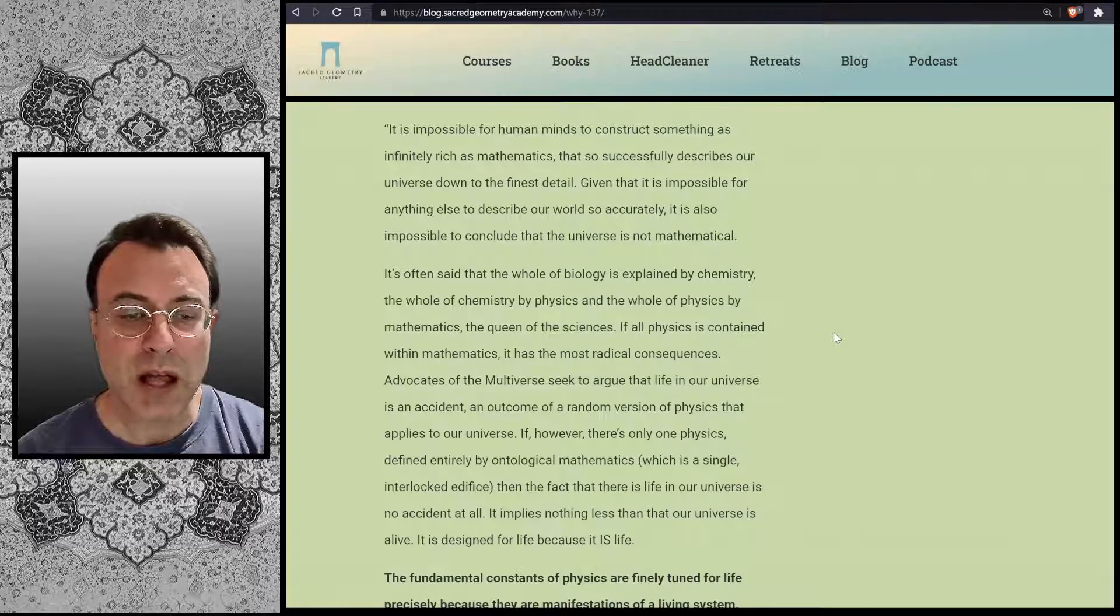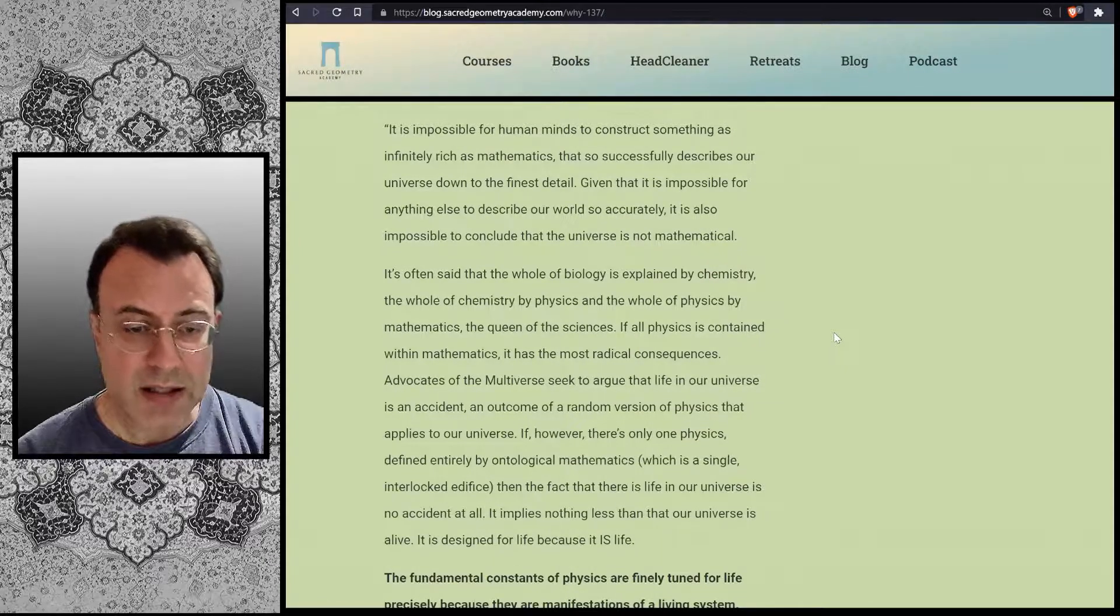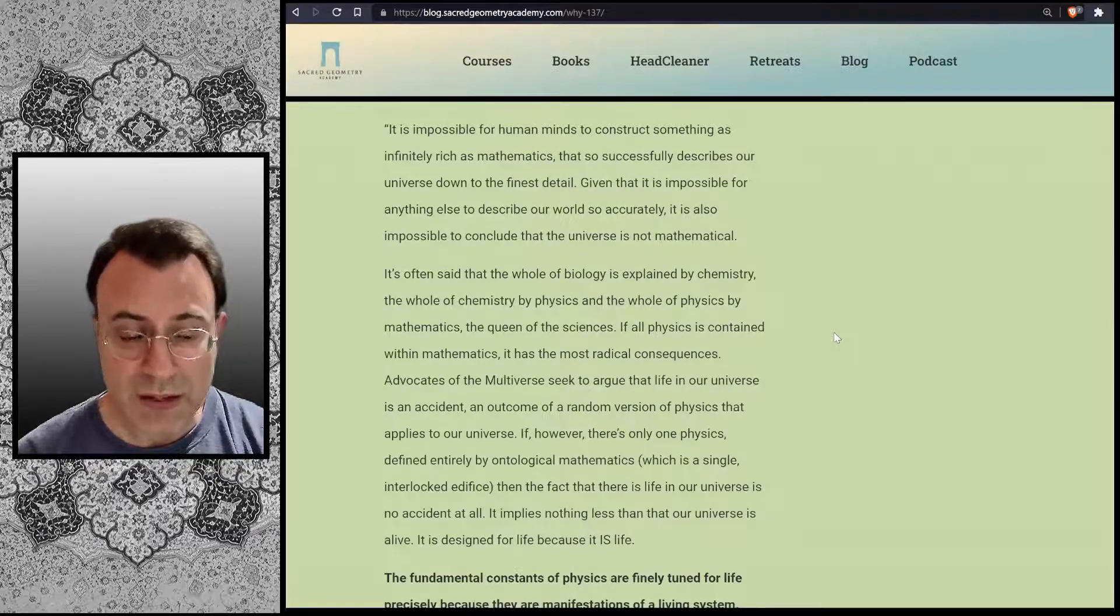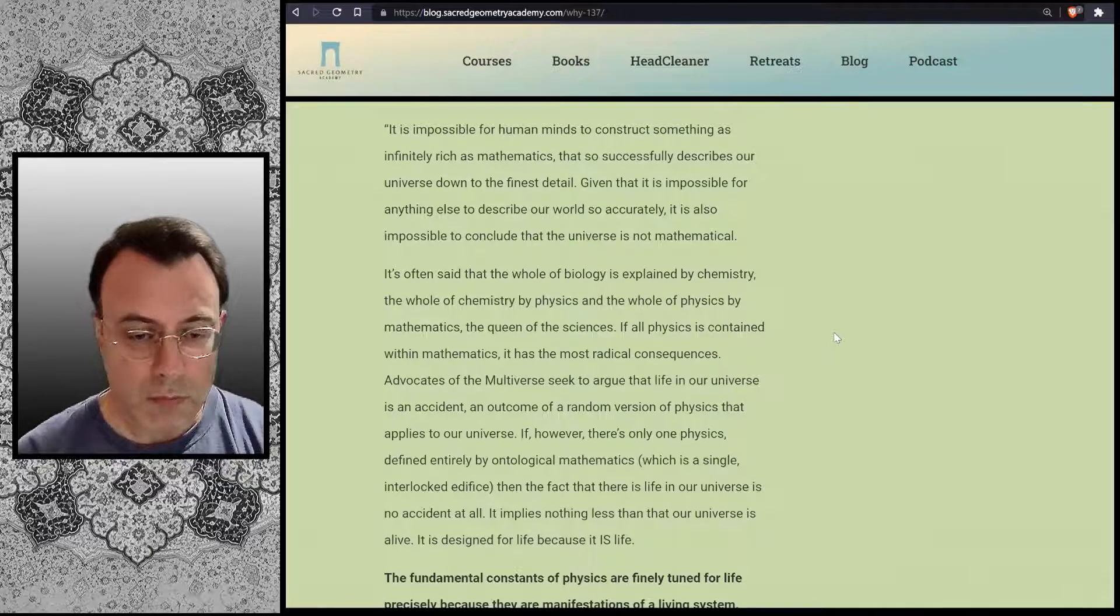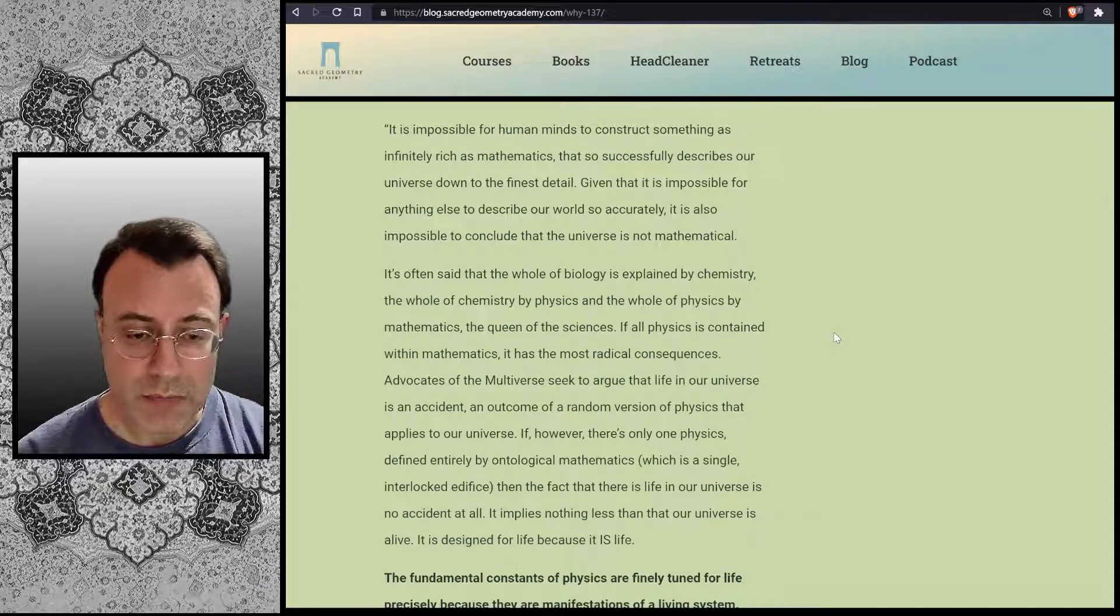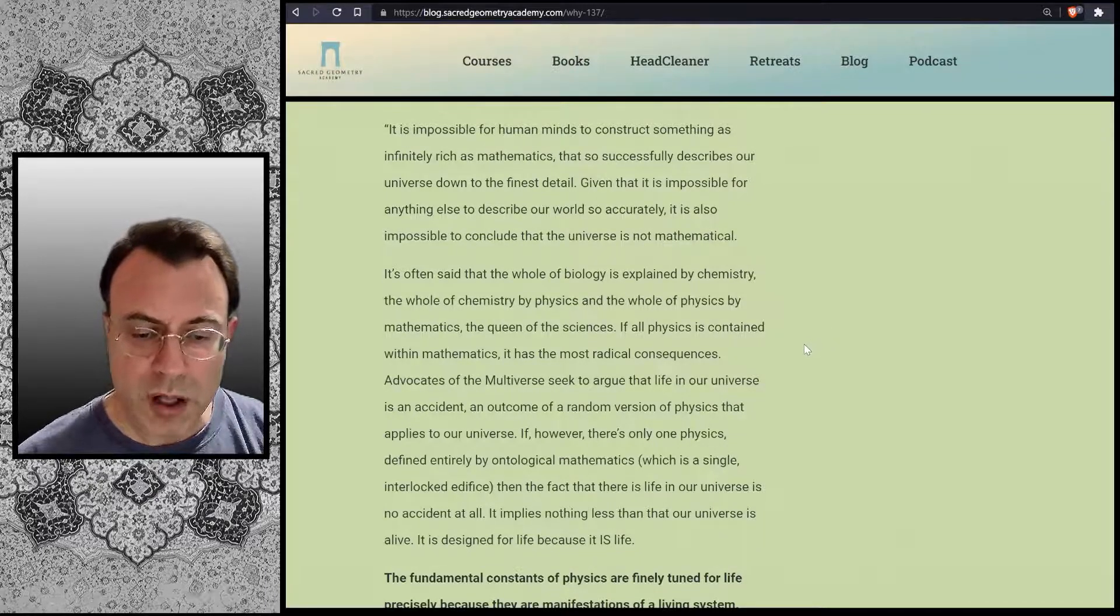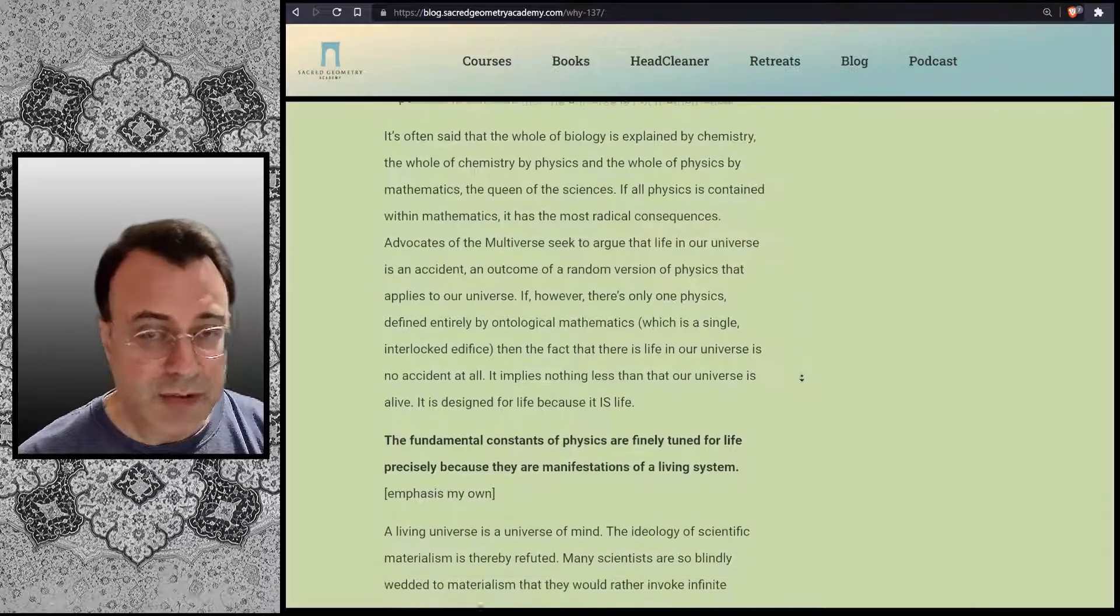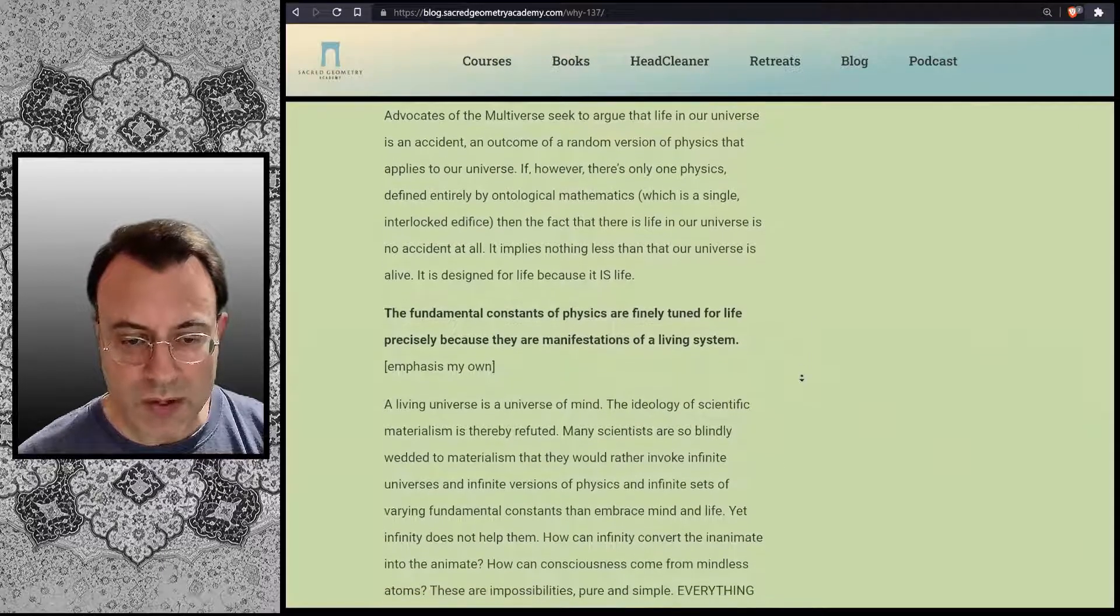"Advocates of the multiverse seek to argue that life in our universe is an accident, an outcome of a random version of physics that applies to our universe. If, however, there's only one physics, defined entirely by ontological mathematics, which is a single interlocked edifice, then the fact that there is life in our universe is no accident at all. It implies nothing less than that our universe is alive. It is designed for life because it is life. Fundamental constants of physics are finely tuned for life precisely because they are manifestations of a living system. A living universe is a universe of mind."